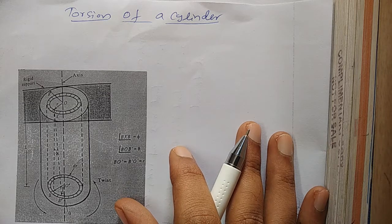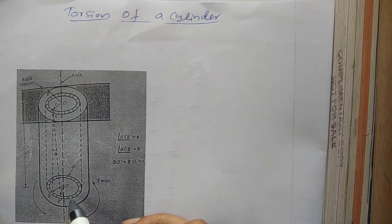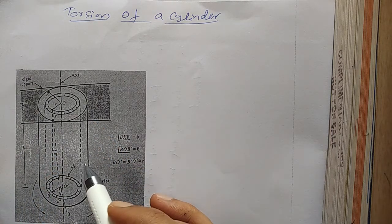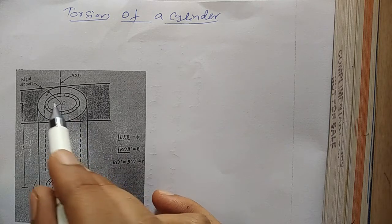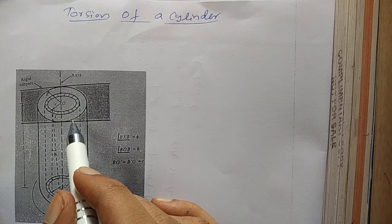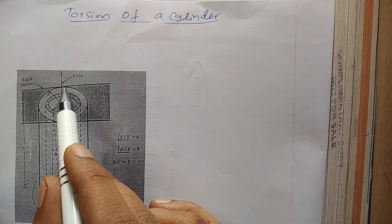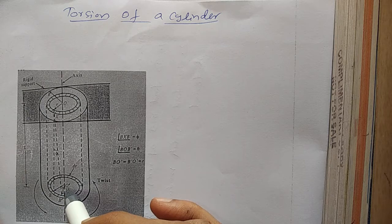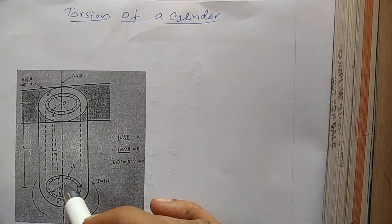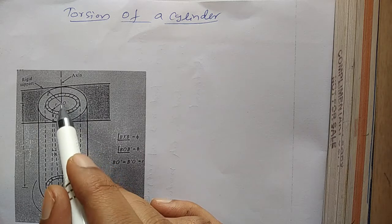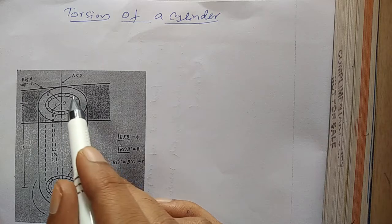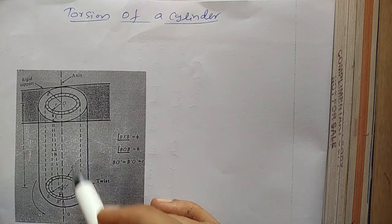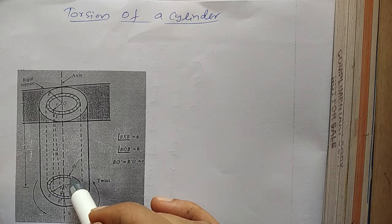Let us consider a long cylindrical rod of length L and radius capital R, which is rigidly fixed at the upper end, and let OO' be its axis. The cylindrical rod is imagined to be made up of thin concentric hollow cylindrical layers, each of thickness dr.